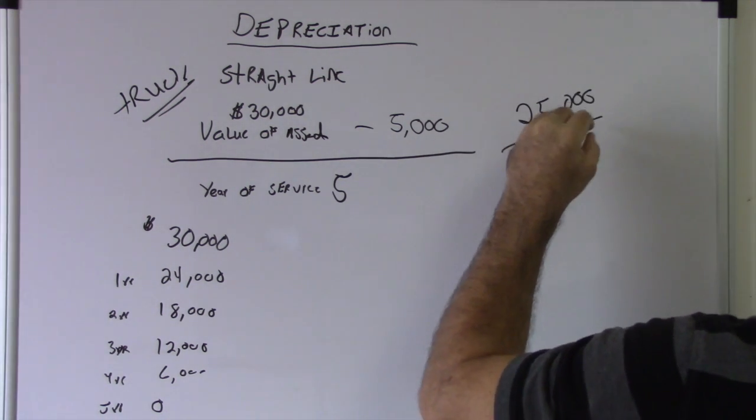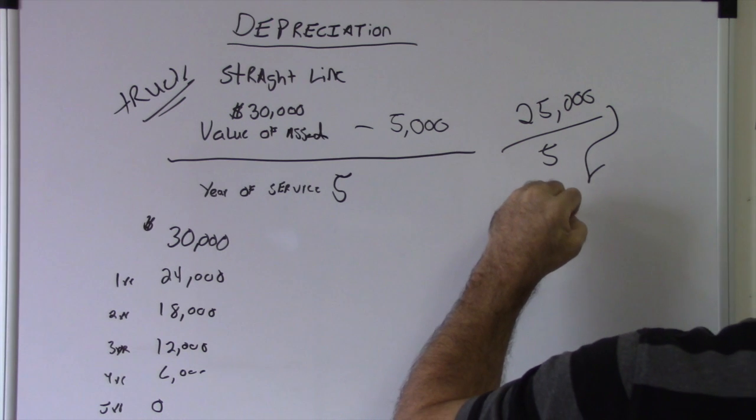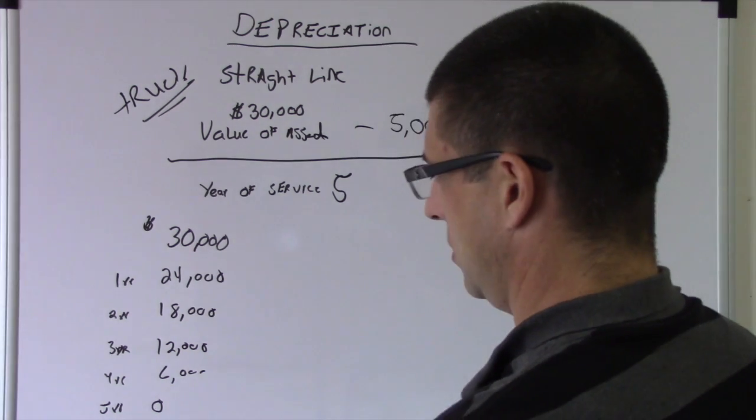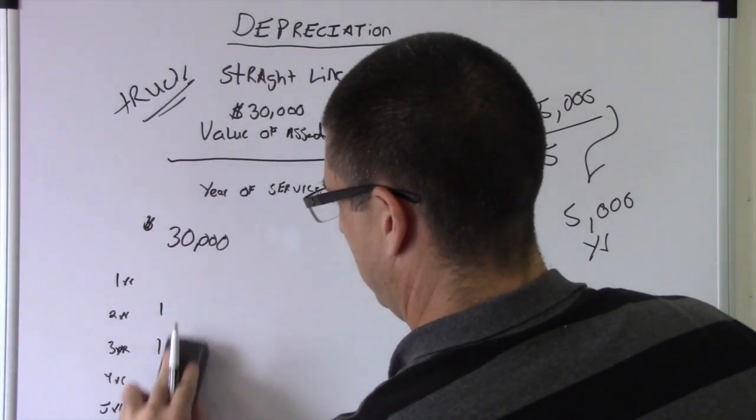Divided by five equals $5,000 a year. Okay, so here we'll do this.